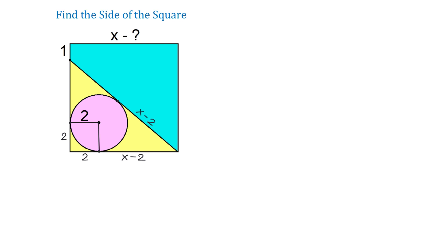This is because 2 tangents drawn to a circle from a point outside of the circle are equal. Now let's take a look at the left side of this square. The whole side is x, this line segment is 1, and this one is 2. Then this line segment will be x minus 1 minus 2, which makes x minus 3.